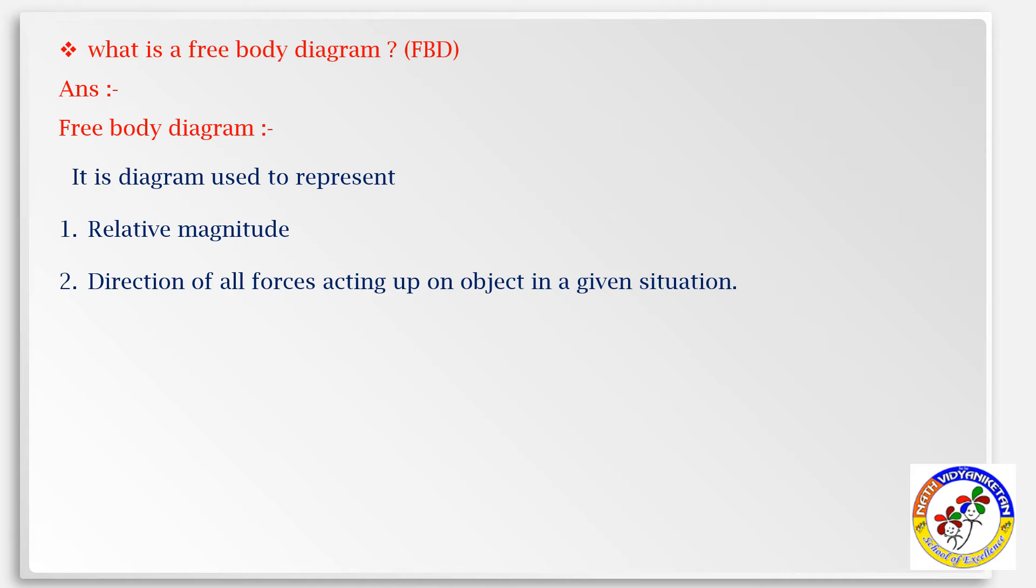In a free body diagram, we represent relative magnitude and direction of all forces acting on an object. Here is a box object. Normal force acts upward, frictional force on the left side, applied force on the right side. There are four forces: the normal force, downward gravitational force, right side applied force, and left side friction force.